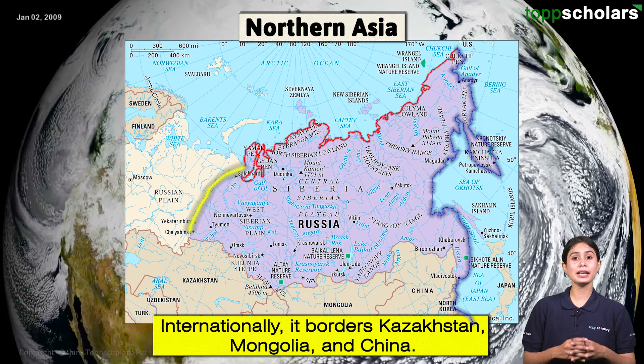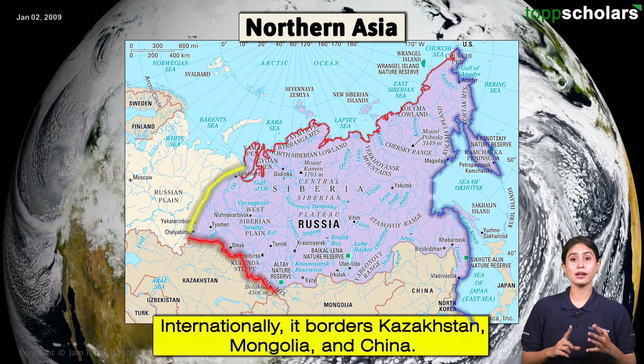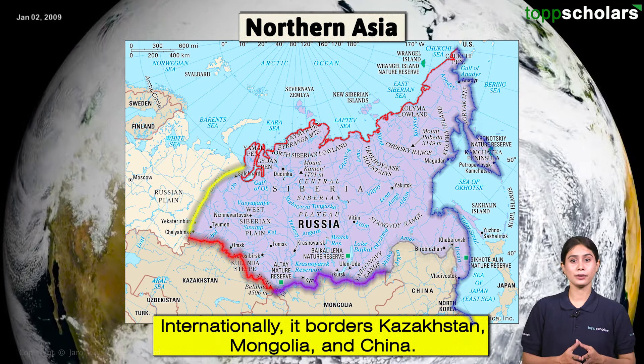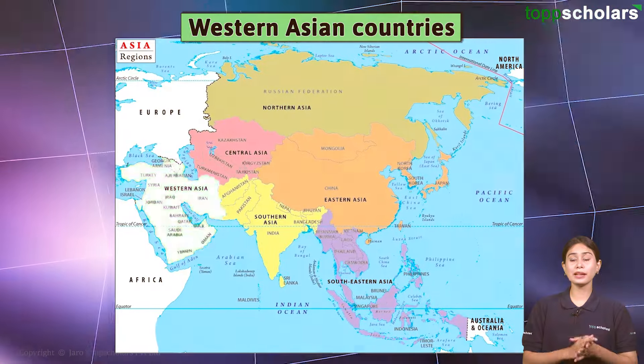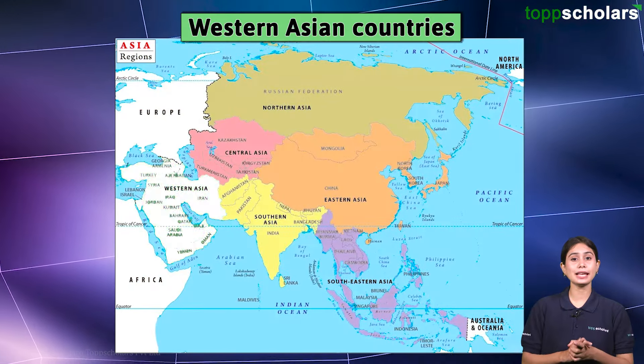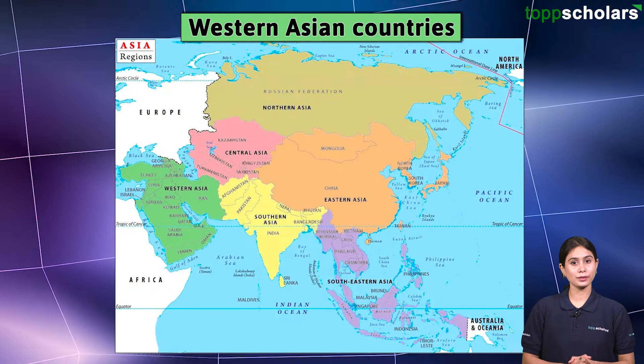Internationally, Siberia borders Kazakhstan, Mongolia, and China. Let us further know about the Western Asian countries.